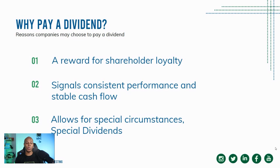The third reason is that companies can pay what are called special dividends. A special dividend is typically a one-off payment — maybe the company had a large one-off transaction or made more than the usual amount of profits. It is usually not the same amount as the regular dividend payment. So if normally they would pay one cent per share, a special dividend could be 10, 20, or 30 cents — it varies, but it would be identified as a special dividend.